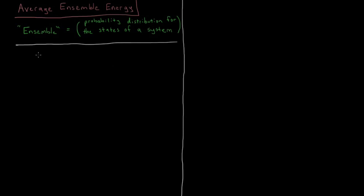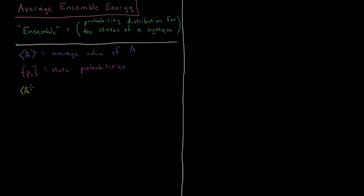If we want to calculate the average value of a certain quantity — let's say we have A in these pointy brackets — that would be the average value of property A. You might also refer to this as an expectation value from quantum mechanics. We have our set of state probabilities, where P_I is the probability that the system exists in state I with energy E_I. The expectation value of A is then a sum over all states I of the probability of state I times the value of property A for state I.